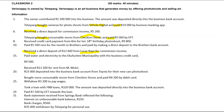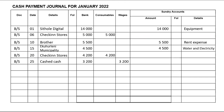We paid 7,000 by EFT towards the loan — that goes to the cash payments journal. We are paying 7,000 to FMB Loans; it goes under bank as well as sundry, which is FMB Loans.